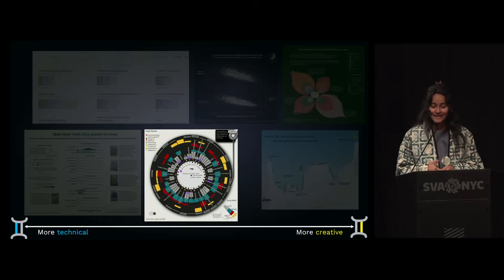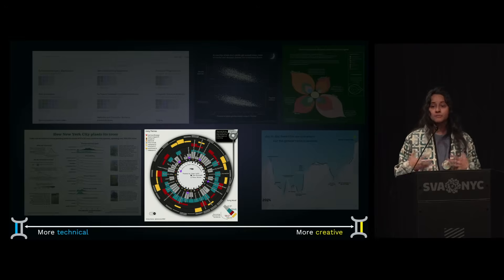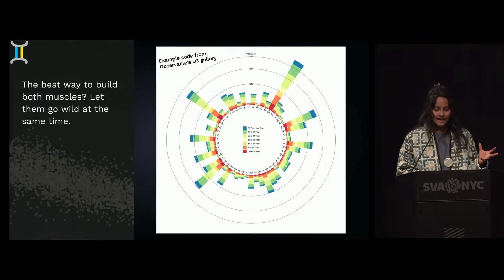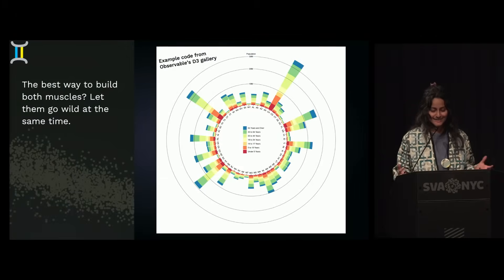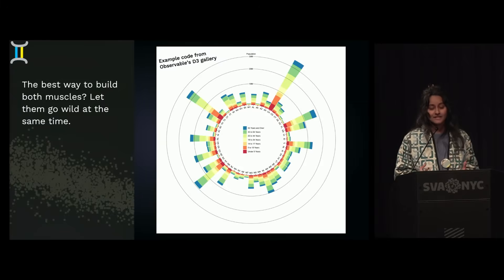The last project I want to talk about is one I consider the first point when I really started to flex my creativity muscle, and it was approached through coding. At this point, coding was my main tool in the toolbox. The question this project answered was: what is the best way to build flexibility, the ability to change course and pivot? And I believe it's to let both go wild at the same time.